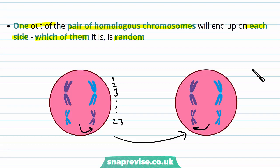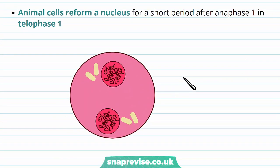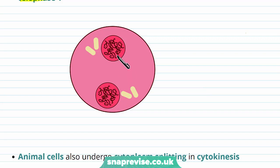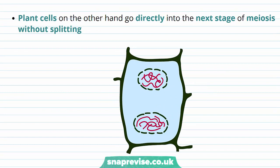The last stages of meiosis 1 are telophase 1 and cytokinesis. In telophase 1, the nuclear envelope reforms — again very similar to mitosis. In animal cells, they reform a nucleus for a short period after anaphase 1 in telophase. The nuclear envelope forms around each set of genetic material, and the cytoplasm splits in the process of cytokinesis, pinching in at each side so that the cell splits into two separate entities. In plant cells it is a little different — they keep their two separate nuclei but go directly into the next stage of meiosis without splitting into two separate cells.